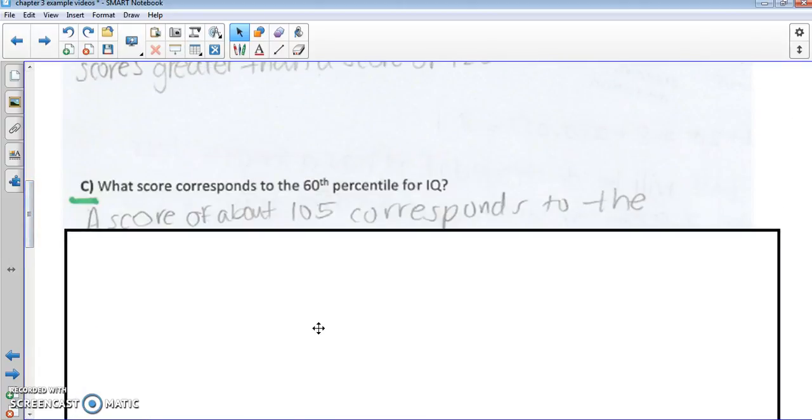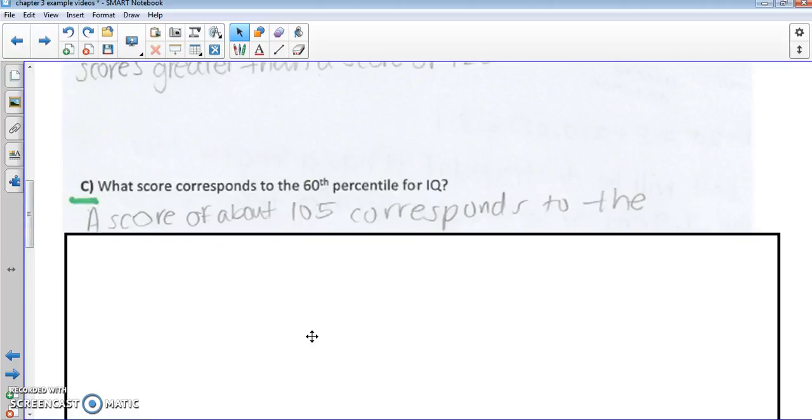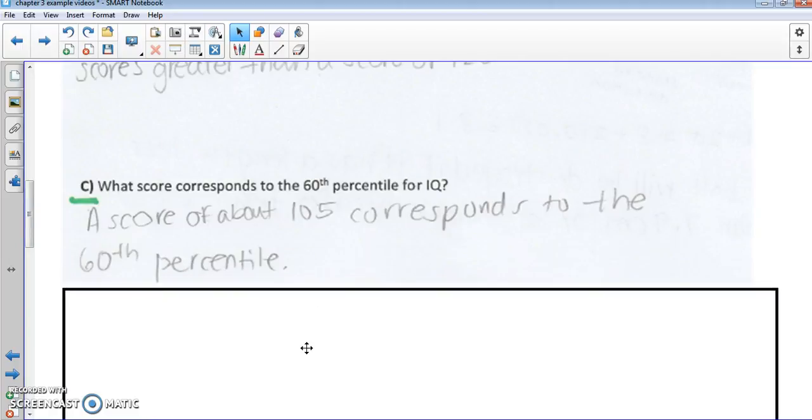And lastly, for part C, that corresponds roughly to about 105, a little bit difficult to tell there, so if you got that within close, I'd give you credit. So that's kind of using an ogive from chapter 2 and showing how that corresponds to percentile and how to actually interpret percentiles.